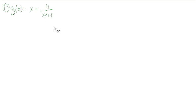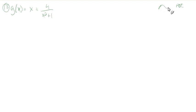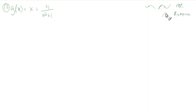Just as a reminder, things that are useful for us when graphing are points of inflection. We know that we switch from concave down to concave up at a point of inflection, or vice versa — concave up to concave down. Extrema, maximum and minimum: it's useful to know if we have a peak or a valley at some point.